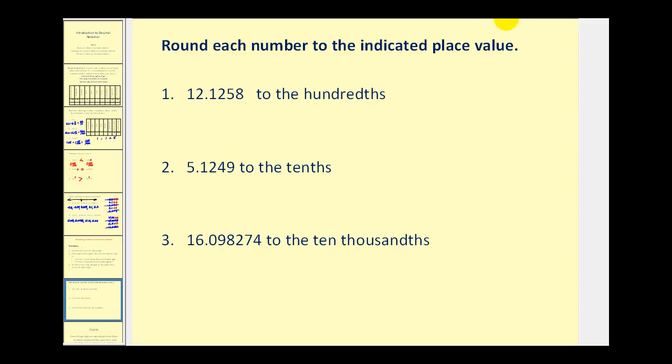So if we want to round this to the hundredths, step one, the two is in the hundredths place value, and the digit to the right, or this five here, is the decision maker. Because it's a five, we round up, so we change a two to a three, 12.13. Now, it's important that we do not include any extra zeros to the right, because this tells the reader we rounded to the hundredths place value. If we added an extra zero here, it would be assumed that we rounded to a different place value.